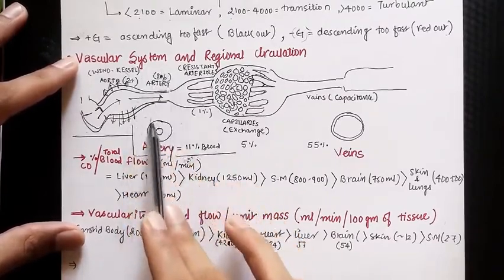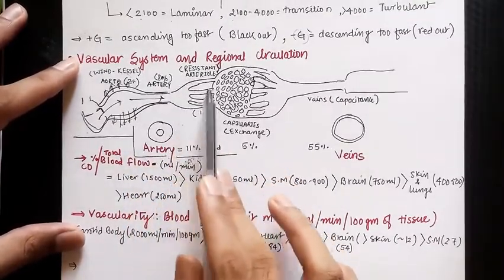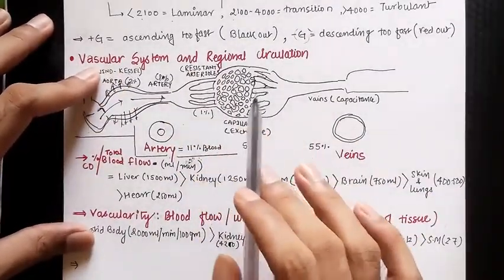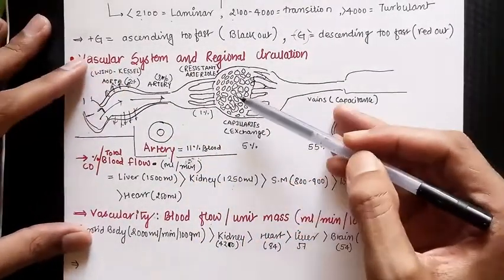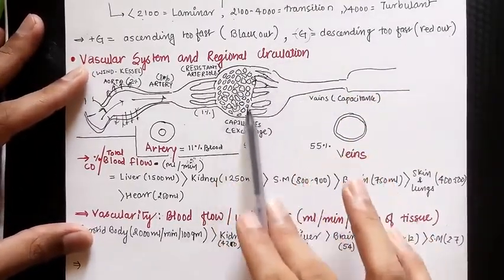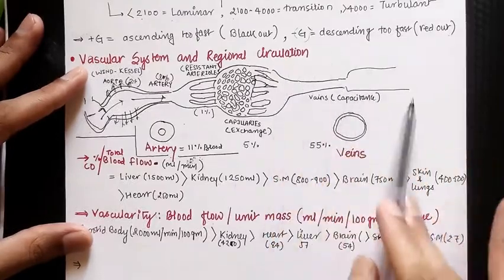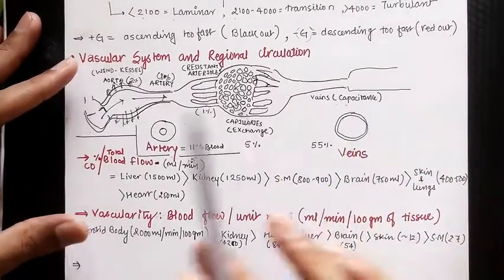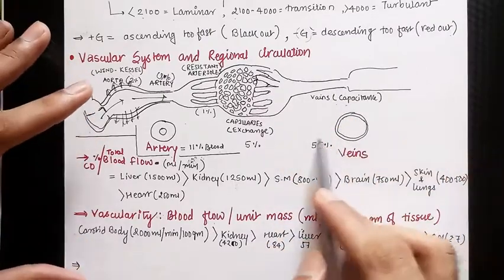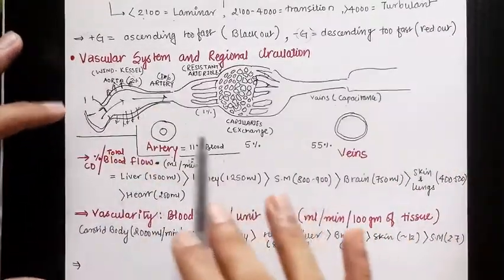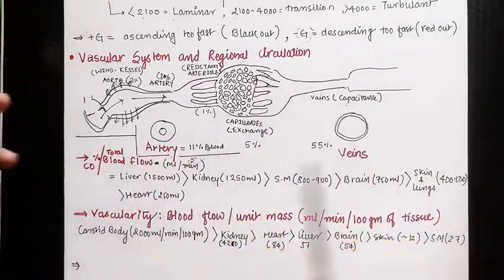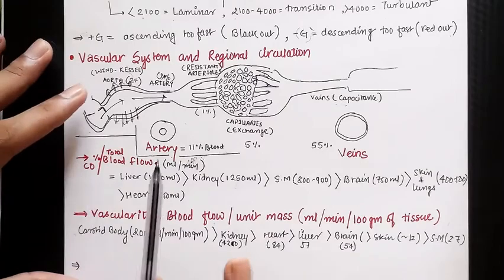Arterioles produce maximum resistance in the circulation of blood. Capillaries allow exchange of material from blood to tissue and from tissue to blood. Venules and veins are called capacitance vessels because they contain the maximum amount of blood in circulation — 55%.